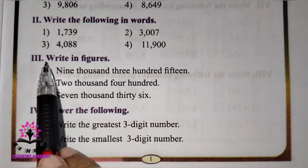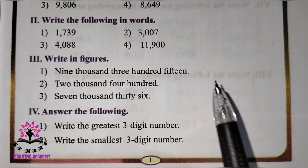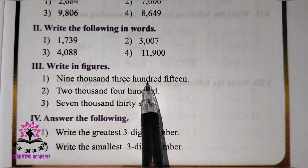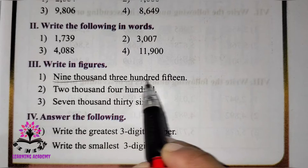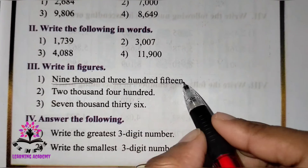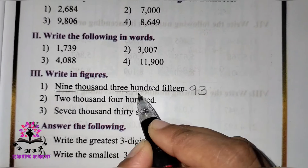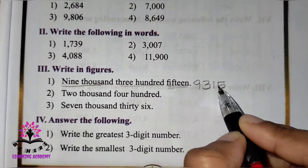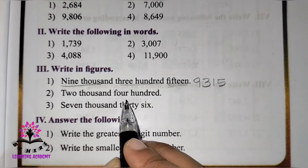Section three: write in figures. You have to read and write the number. 9,315 — nine thousand three hundred and fifteen. How to write it? First place the digits: 9, 3, 1, 5. Next one: 2,400 — two thousand four hundred. Two is in thousands place, 400.